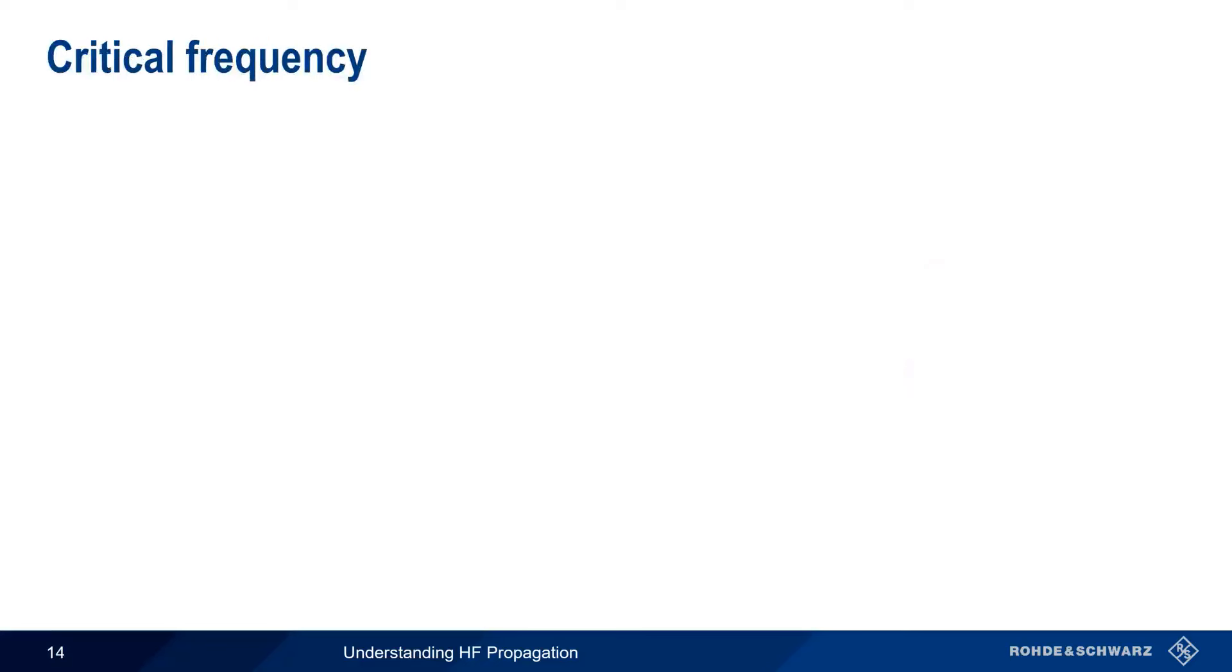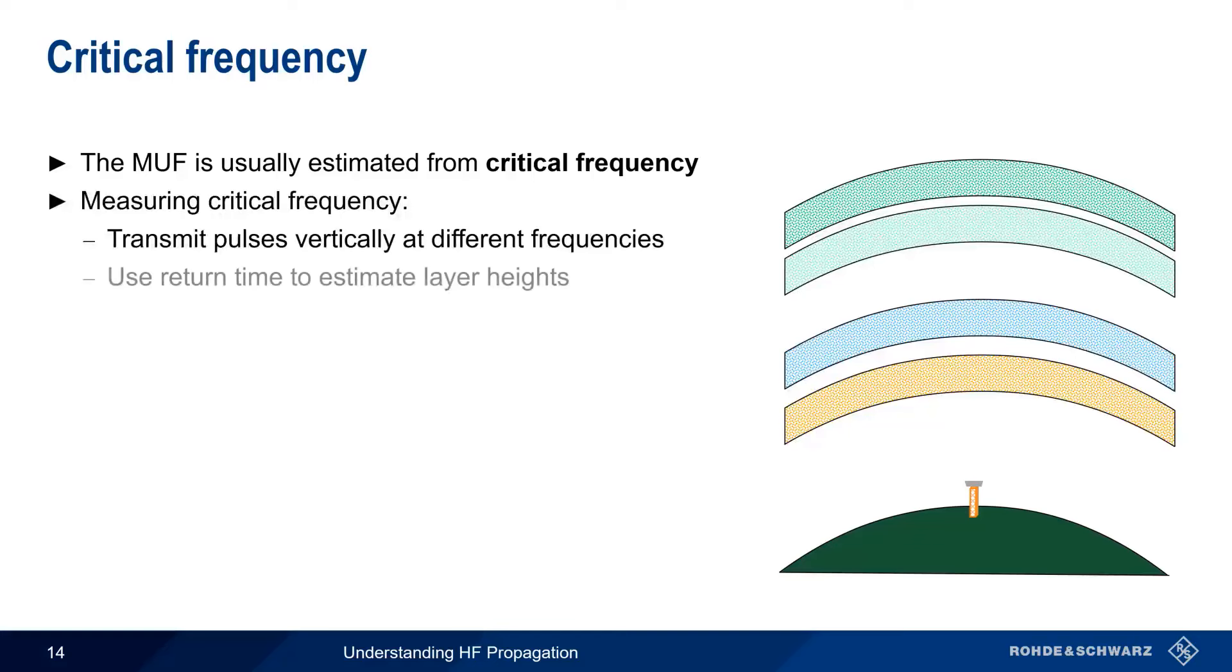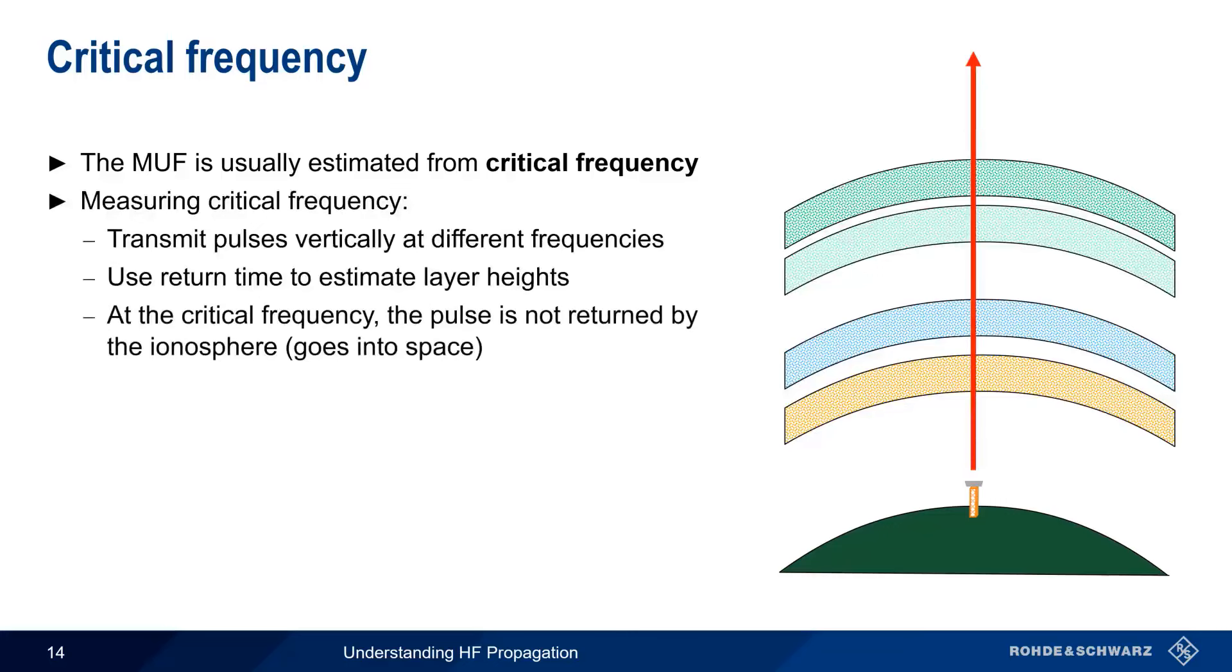One way to determine the MUF is purely through experimentation, but there are also methods for estimating the MUF using something called the critical frequency. The process for measuring the critical frequency is as follows. Pulses at various frequencies are transmitted vertically by equipment called ionosons. Depending on the frequency of the pulse, these pulses are returned by different layers of the ionosphere, and we can use the return time to estimate the heights of the different layers. Once we reach a certain frequency, the pulses are not returned by the ionosphere, and instead continue on into space. This is the critical frequency.